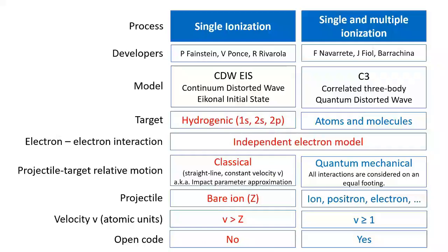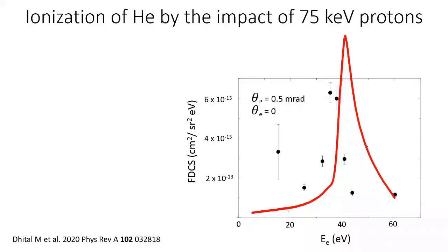Let me show you some cases where the two theories do not coincide. Here we see a very recent comparison of the standard CDW model with experimental results by our colleague from Missouri, Röhler, for the ionization of helium by the impact of protons of 75 keV. We show the fully differential cross-section as a function of the electron energy when the electron is emitted in the forward direction and the proton at a very small angle of 0.5 milliradians. The performance of the CDW model is very poor.